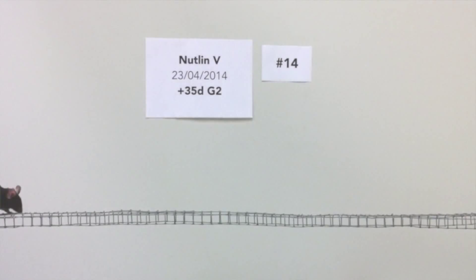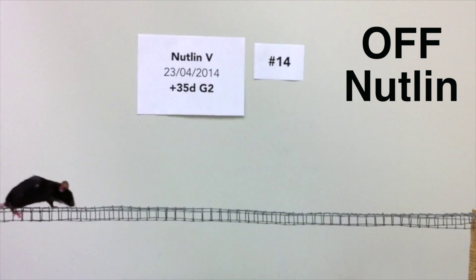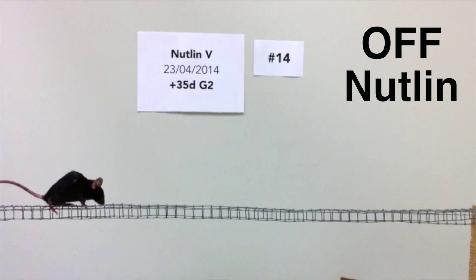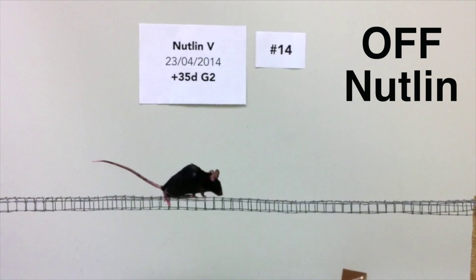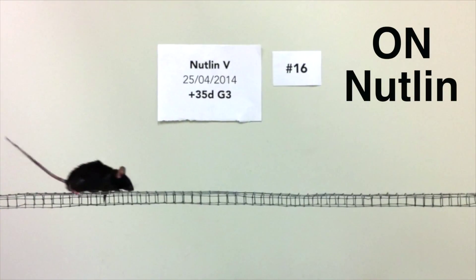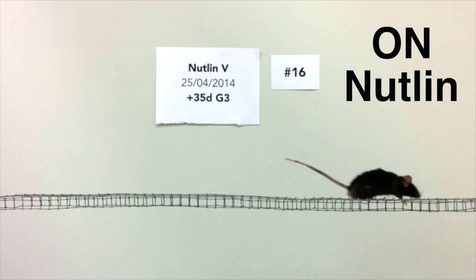Nutlins are a class of drugs currently in phase 2 clinical trial for sarcoma. Nutlin-3 enhances the activity of regenerative P53 by blocking its interaction with MDM2, and it represents a real candidate for translation in clinical spinal cord injury.